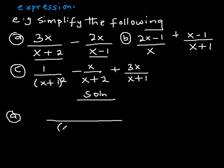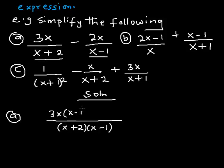So I'm multiplying (x + 2) by (x − 1). Then dividing by (x + 2): (x + 2) divided by (x + 2) leaves me with (x − 1), and I multiply (x − 1) by 3x, giving 3x(x − 1). Then I bring down the minus sign, divide the denominator by (x − 1): (x − 1) cancels (x − 1), leaving (x + 2), and I use that to multiply 2x, giving 2x(x + 2).